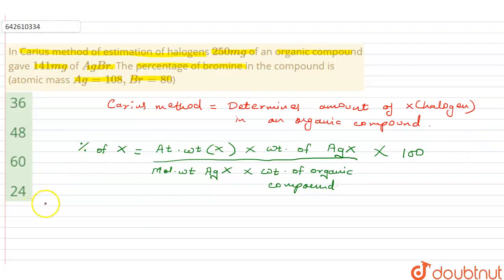Now in this case, what all has been given? Let us check that out. So weight of the organic compound has been given to us. What is the weight of the organic compound over here? It's 250 milligrams. What next? We have been given the weight of silver bromide, that's AgBr, and that is 141 milligram. Now the atomic weights and the molecular weights have already been given.